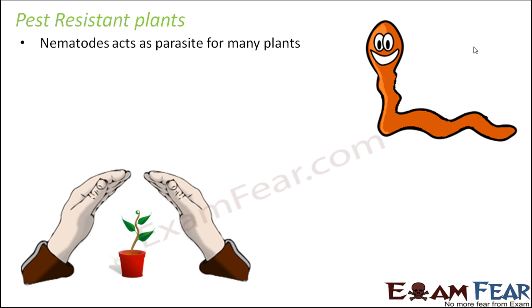Nematodes act as parasites for many plants. Nematodes are roundworms that live inside a plant for quite some time, getting all their nutrition from the plant and harming it. This reduces the crop yield and as a result productivity decreases, having a negative effect on agriculture and crop productivity.